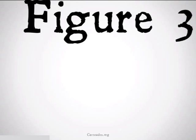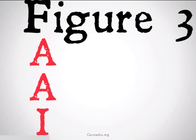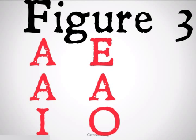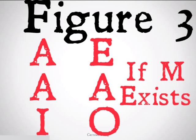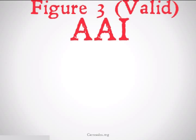Figure 3 looks like this, and Figure 3 conditionally valid syllogisms are going to be AAI and EAO. They're only going to be valid if M exists. This is different from Figures 1 and 2. Let's take a look.